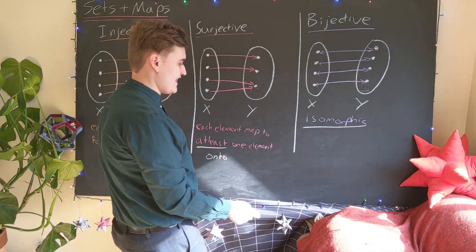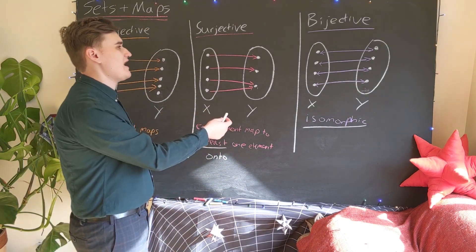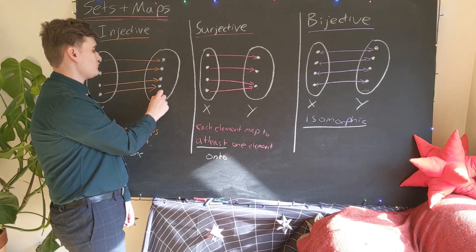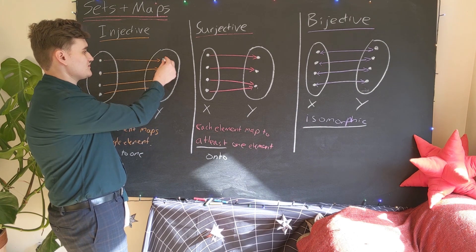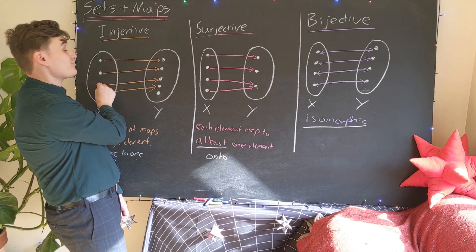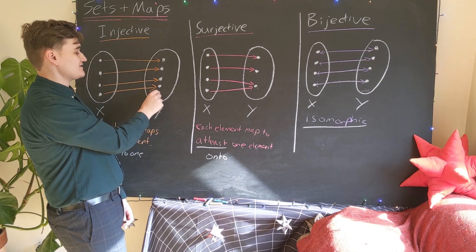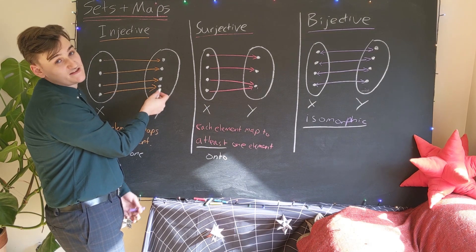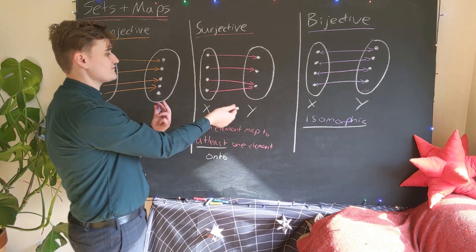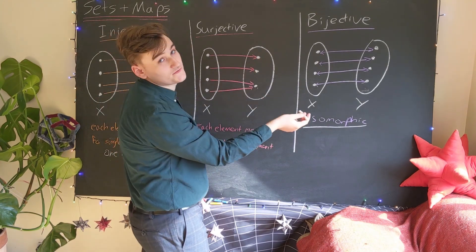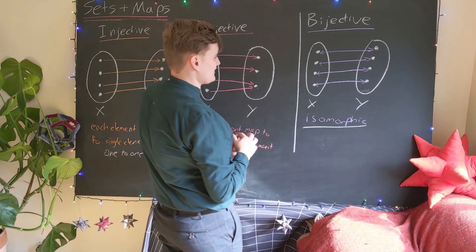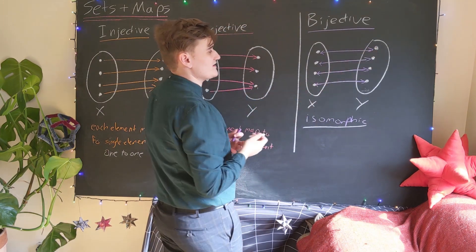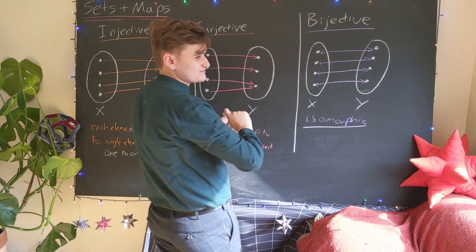We can only define an inverse map for the surjective and bijective cases. If we look at the injective case, we can't define an inverse because in order to define a map we have to map every element from the domain; however, in the injective case, there's an element in the codomain not mapped to by any domain element, so it has an undefined inverse. We can only define an inverse where every element is mapped onto. Heuristically, the inverse map means following the arrow in the other direction to obtain from the target set the corresponding element that was mapped onto it.